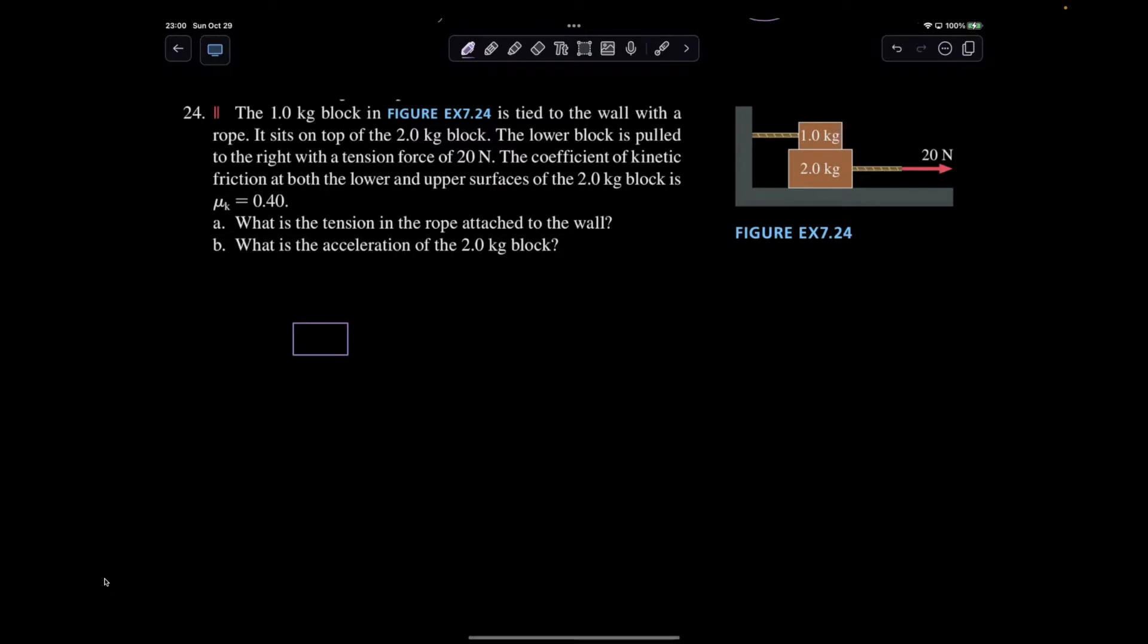So there's my free body diagram for my one kilogram. Obviously, I'm going to have my mg and I'm going to have normal. It is moving relative to two kilograms to the left, so there's force of friction.